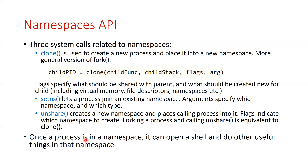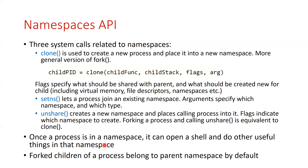Once a process is placed in a namespace, it can open a shell, run applications, exec some application. The process and all its descendants will continue in that new namespace. Fork children of a process will always continue in the namespace of the parent unless clone is done again. By default, a parent and all its descendants reside in the namespace of the parent.